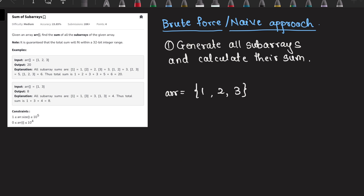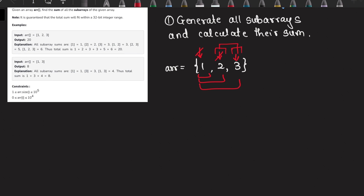What's the brute force or naive approach? Of course, it is generating all the possible subarrays and then calculating their sum. To generate all subarrays, you first fix the starting point — say index one — and keep expanding the window until you reach the end of the array. Then you move the starting point. For array [1,2,3], starting at one gives subarrays: one; one-two; one-two-three. Then starting at two gives: two; two-three. Then starting at three gives just: three.